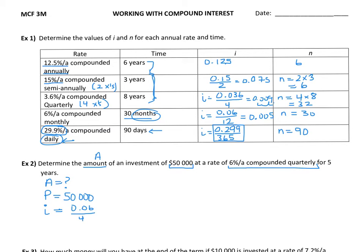You can either do that calculation or just leave it like that. If you do the calculation, you're going to end up with 0.015.